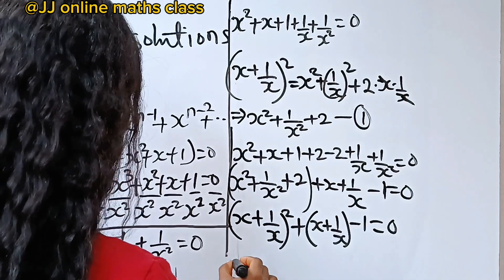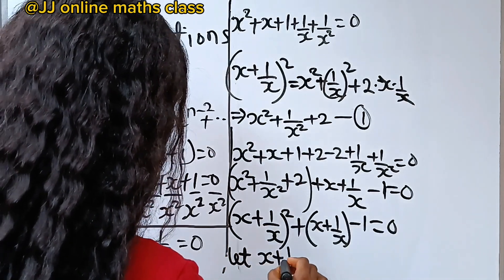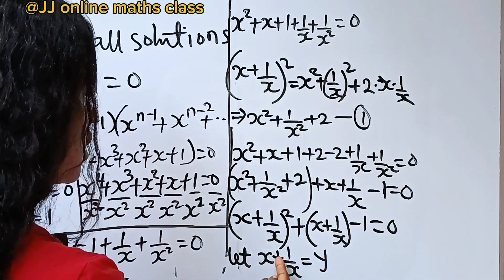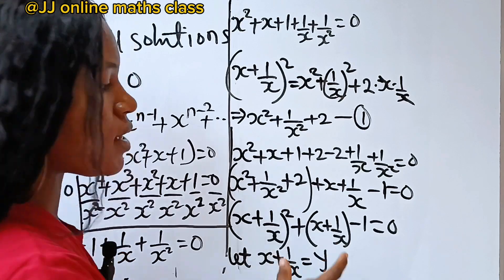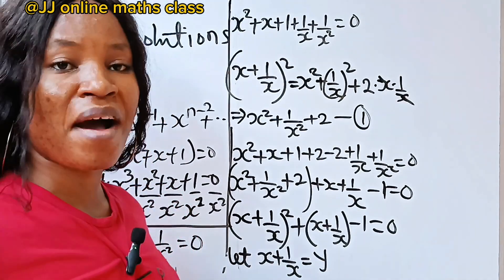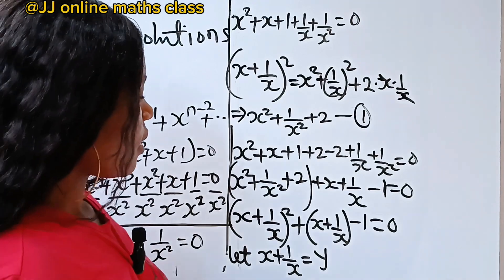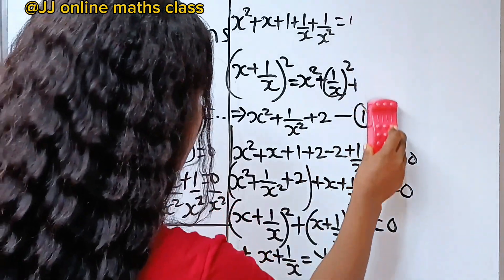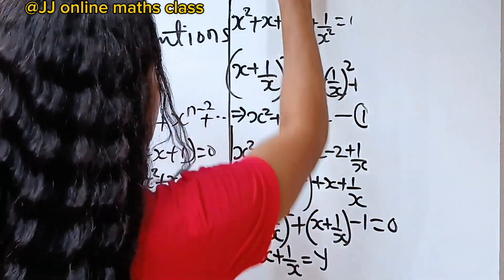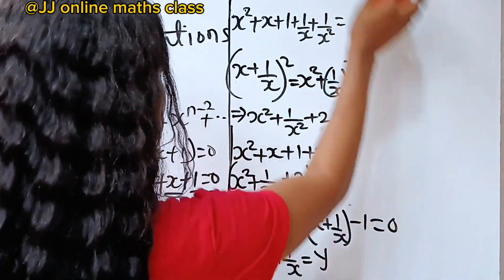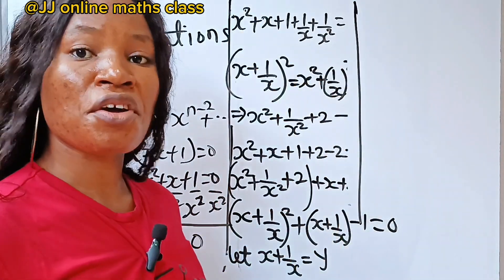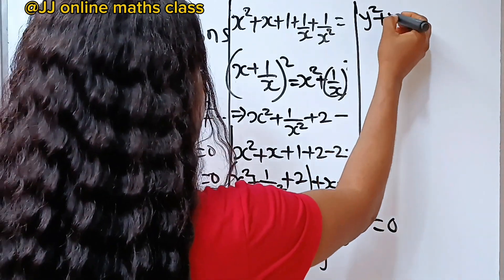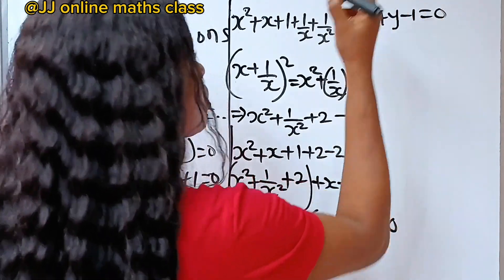We can simplify by letting x plus 1 over x equal y. Since we have it in two places, let's call it y and form our quadratic equation. Substituting y, we get y squared plus y minus 1 equals 0.